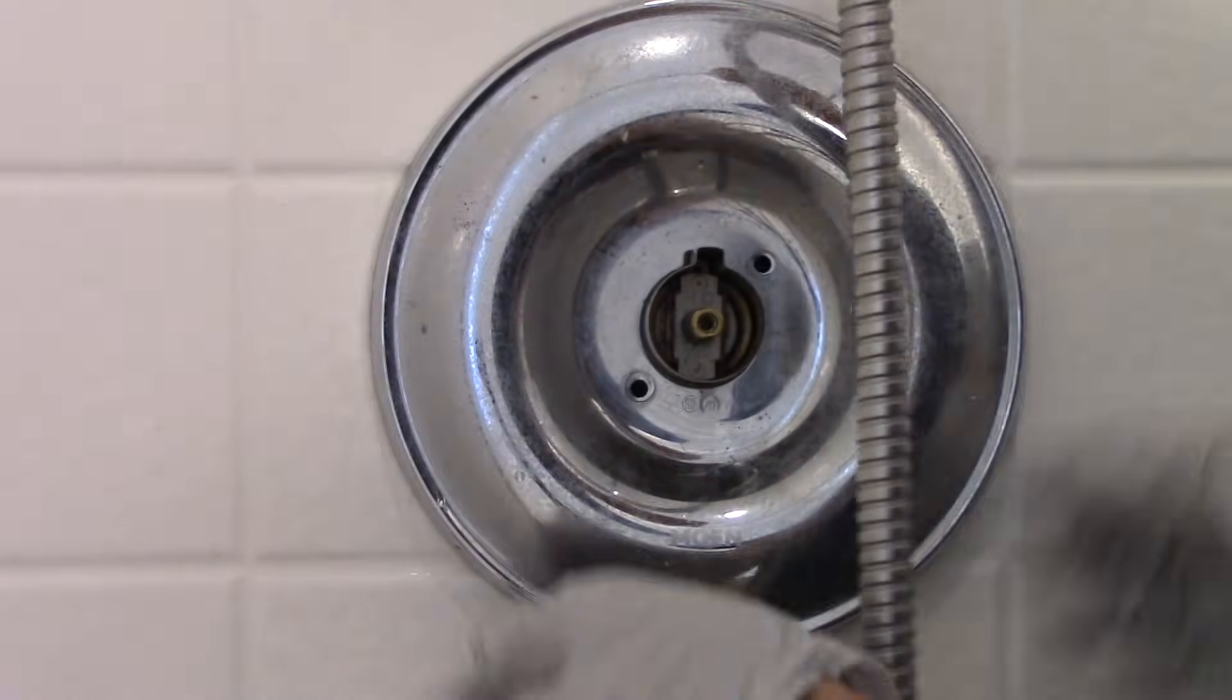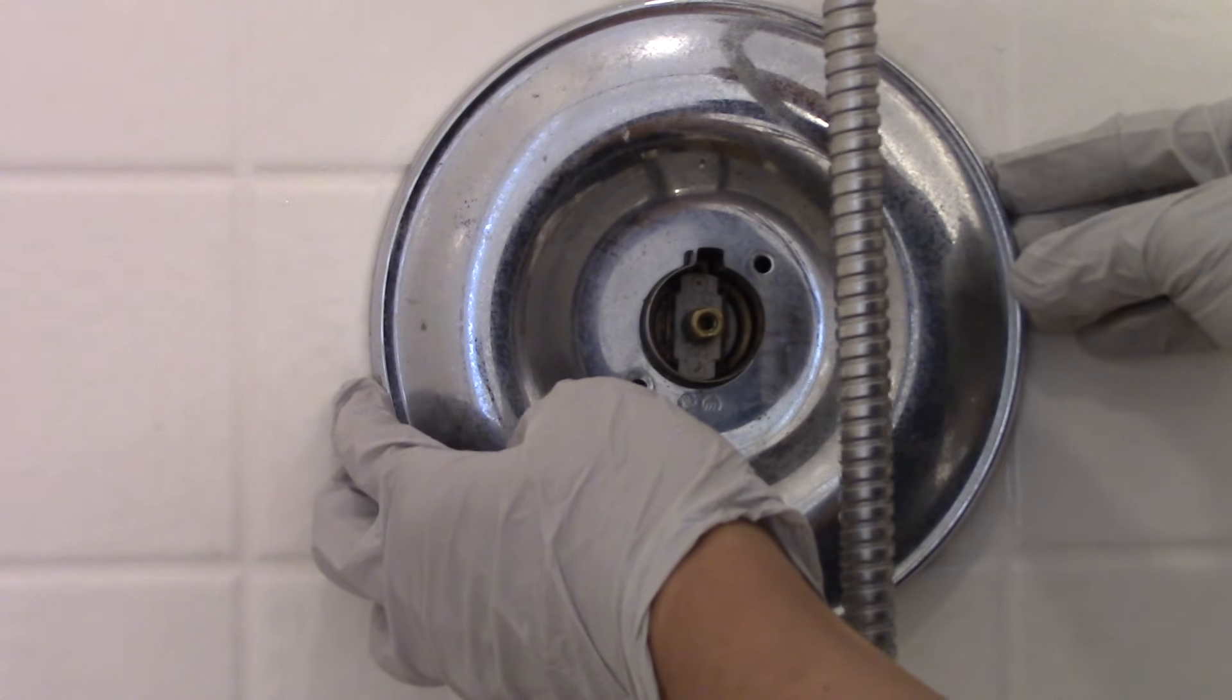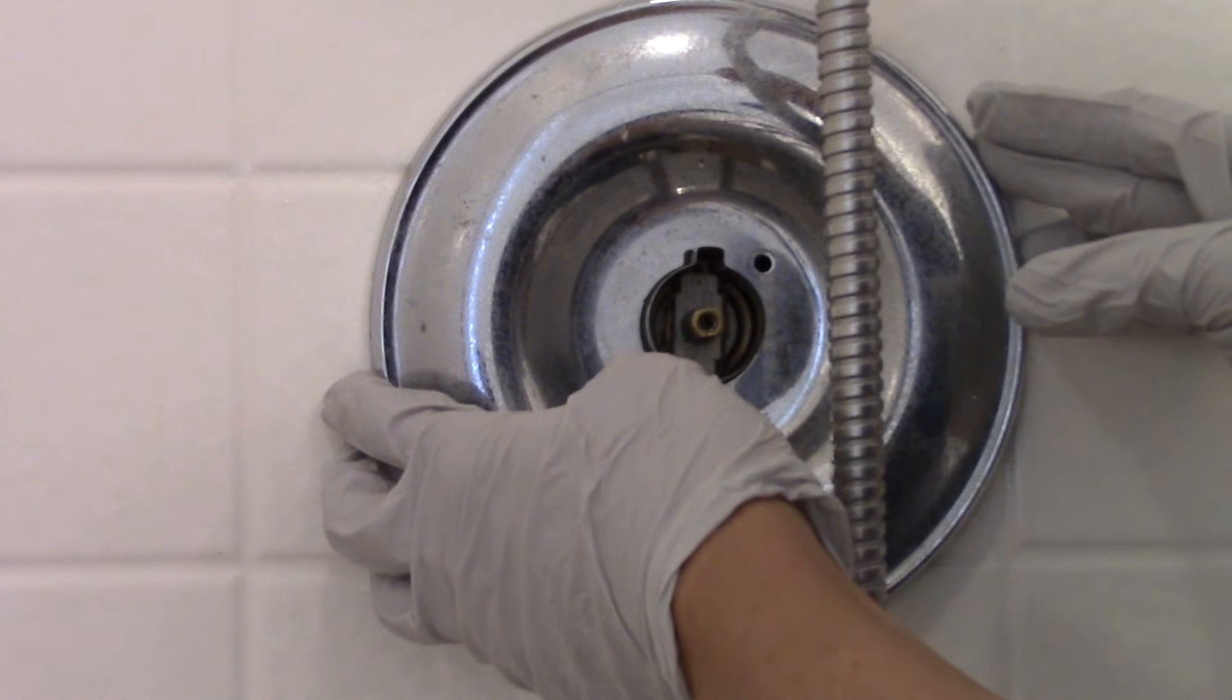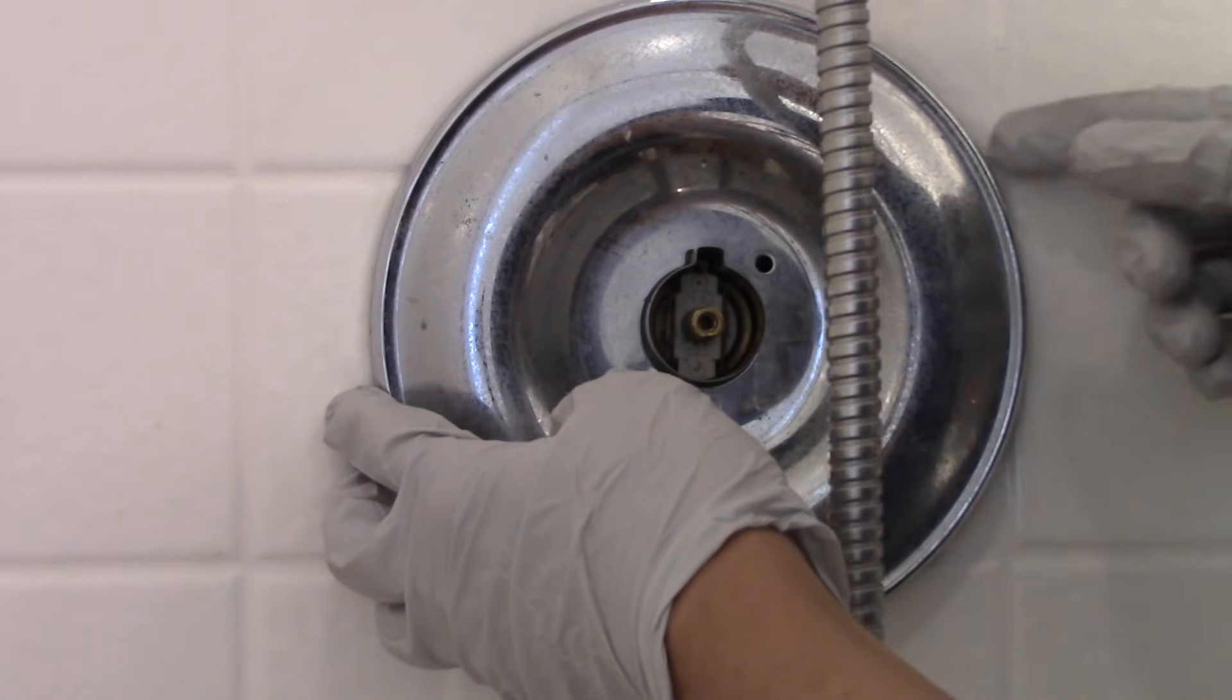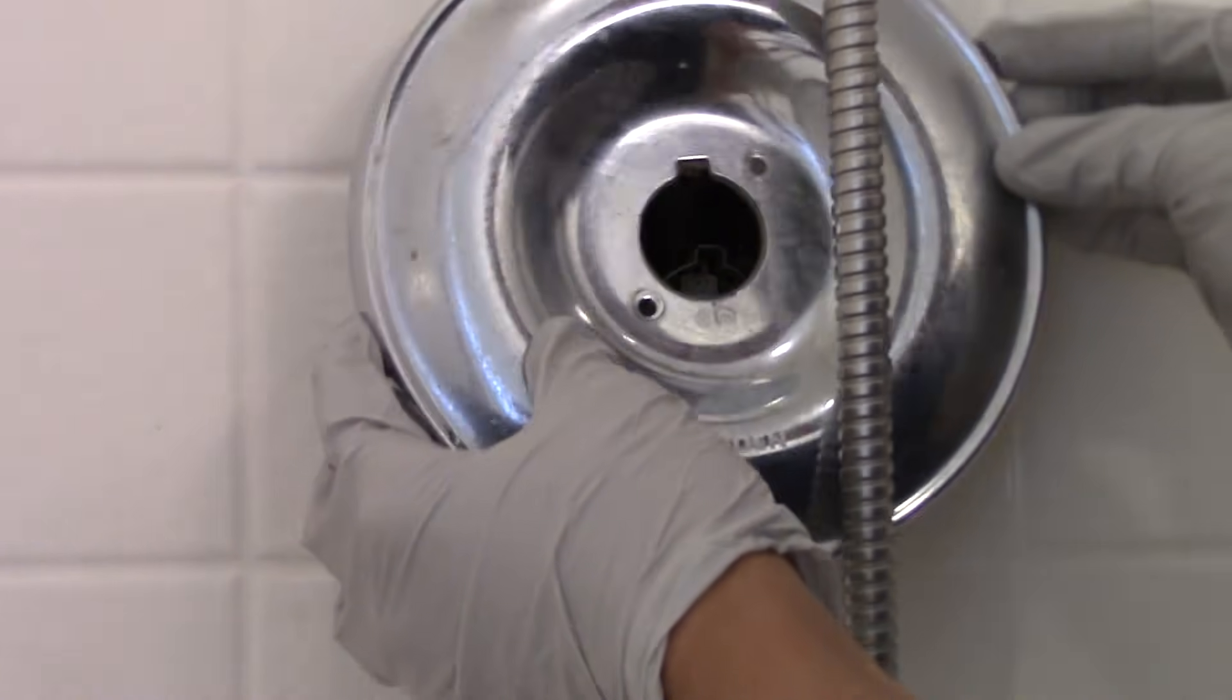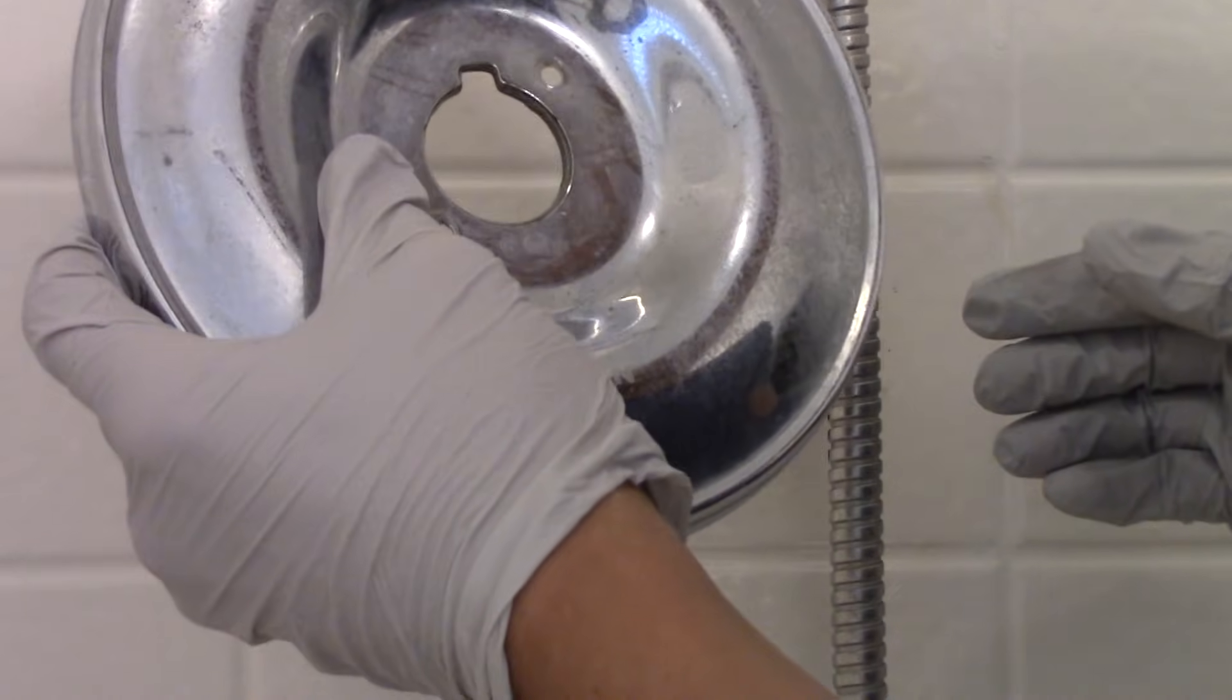So I cut the old caulking with a razor blade or an Xacto knife. You have to be real careful not to cut into the fiberglass or scratch this escutcheon plate.